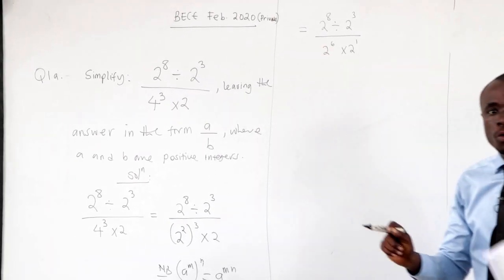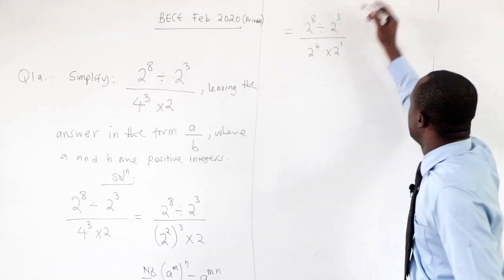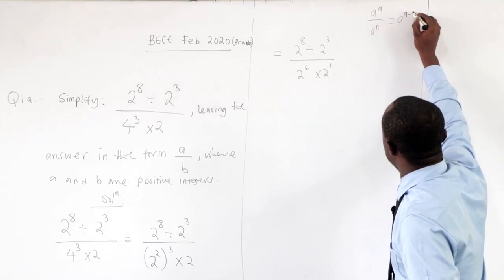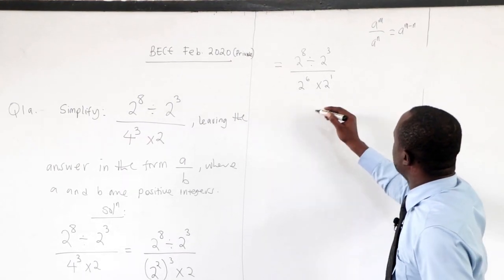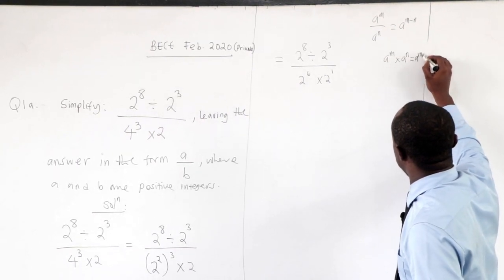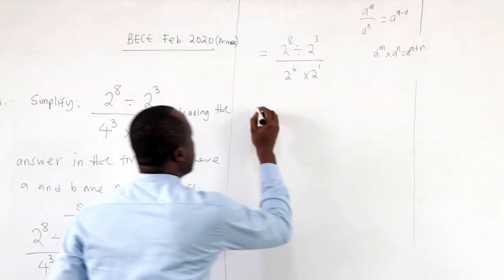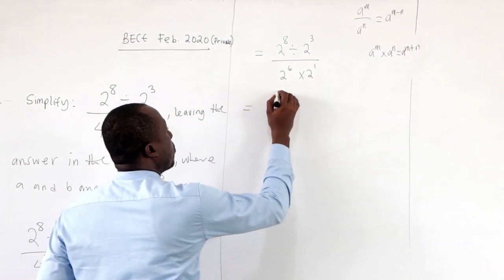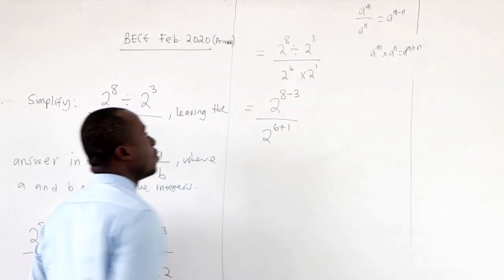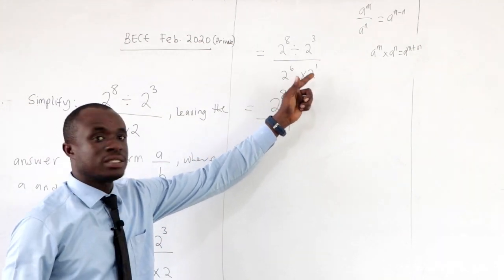Indices rules tell us: when dividing with the same base, subtract the exponents (a^m ÷ a^n = a^(m−n)); when multiplying with the same base, add the exponents (a^m × a^n = a^(m+n)). So in the numerator we get 2 to the power 8 minus 3, and in the denominator 2 to the power 6 plus 1 — because we are multiplying, so we add the exponents.